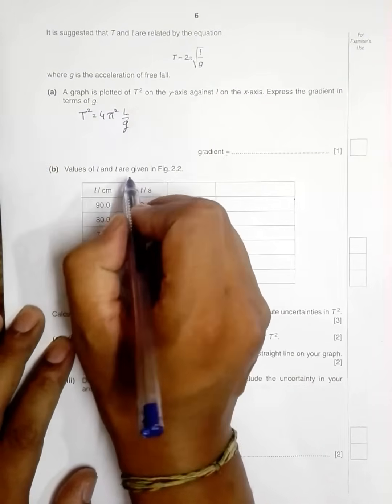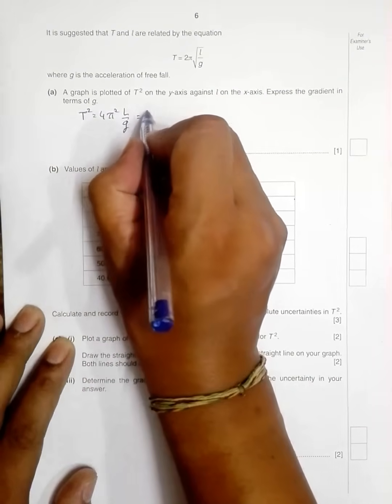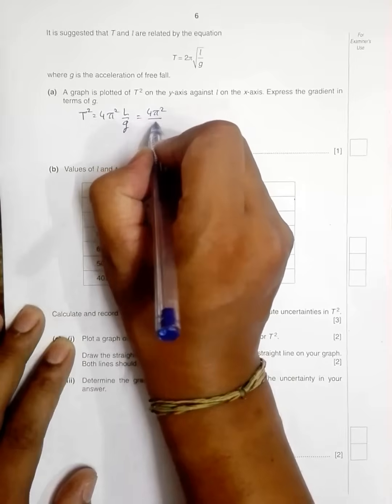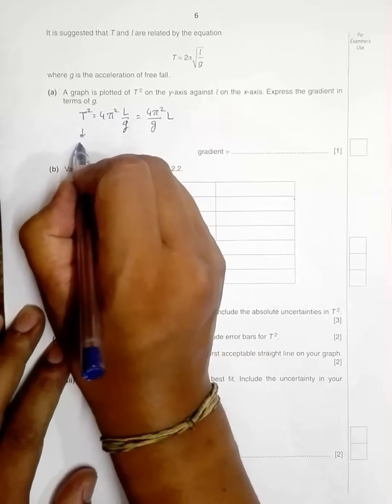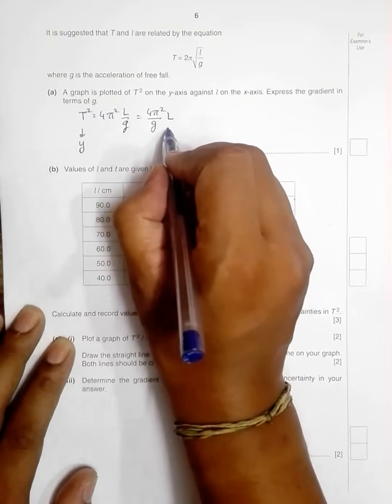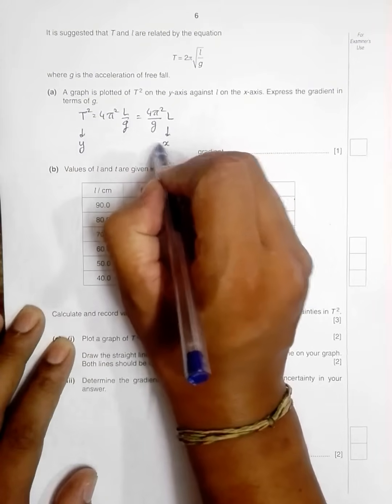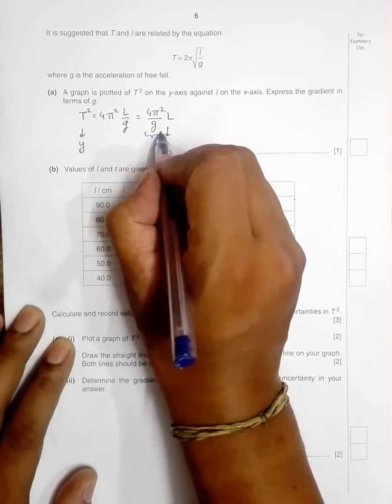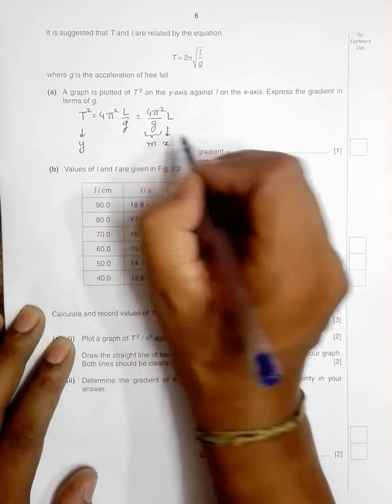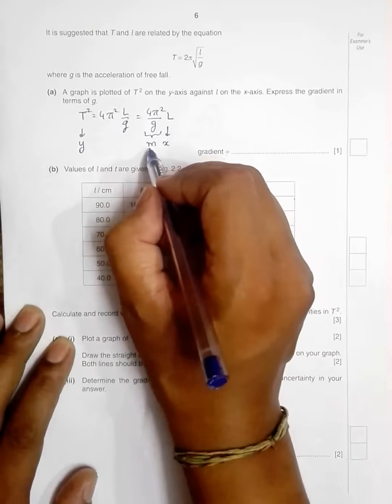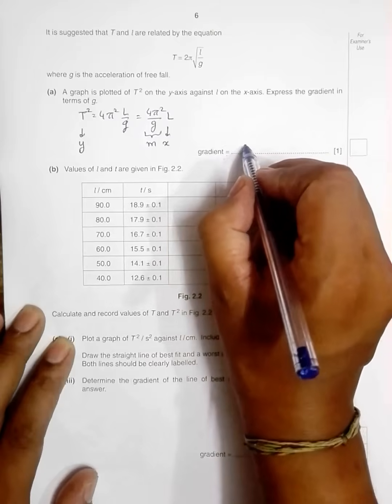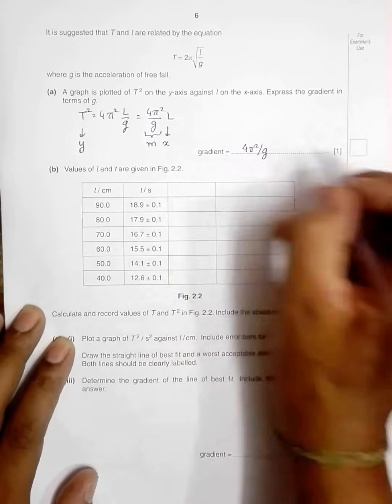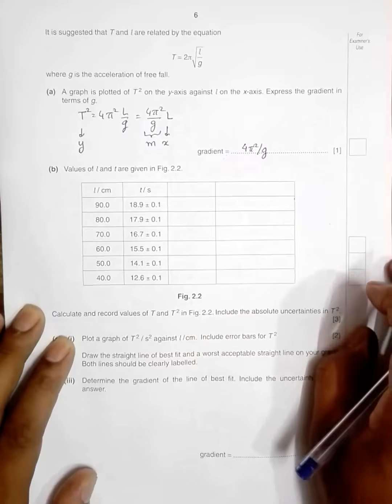We have drawn T² on the y-axis, we have drawn L on the x-axis, so the remaining quantity should be equal to the slope which I have written as m. I might write m or g but here is m. So this is the gradient and it's equal to 4π²/g. So that scores one mark.